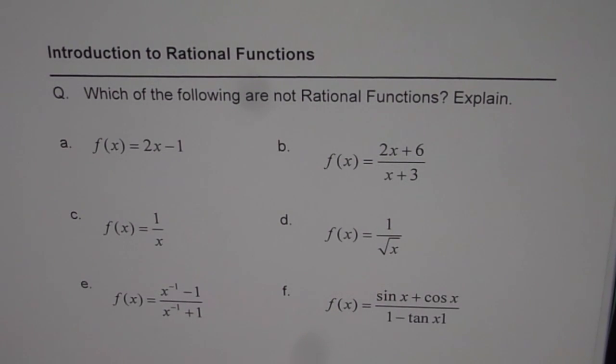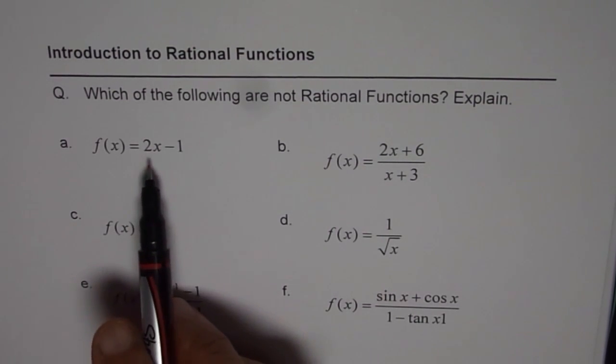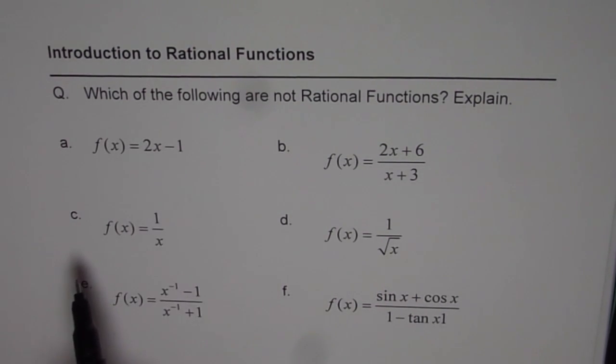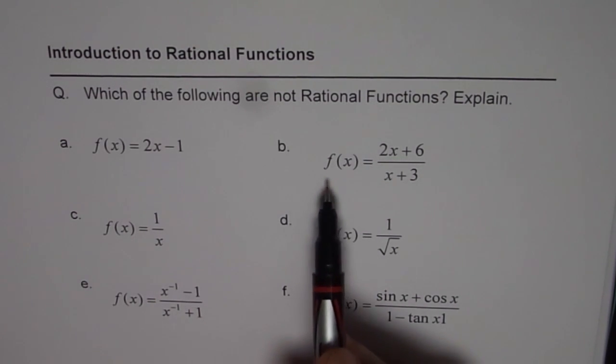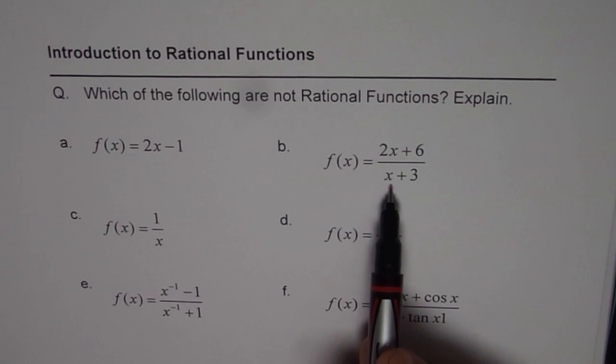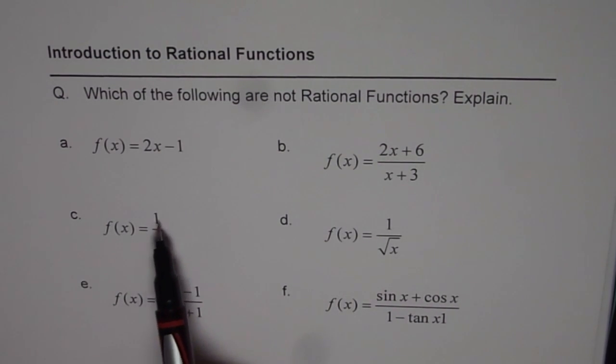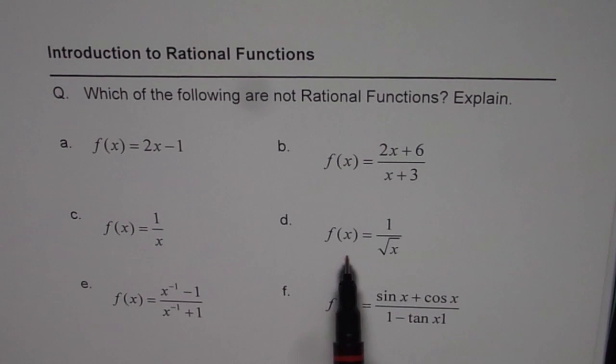And we will discuss them one by one. f(x) equals 2x minus 1. Is it a rational function or not? b: f(x) equals (2x + 6) divided by (x + 3). c is f(x) equals 1 over x. d is f(x) equals 1 over square root of x. e: f(x) equals x to the power of minus 1 minus 1 divided by x to the power of minus 1 plus 1. And f is f(x) equals (sin x + cos x) divided by (1 - tan x). So these are the 6 functions given to you.